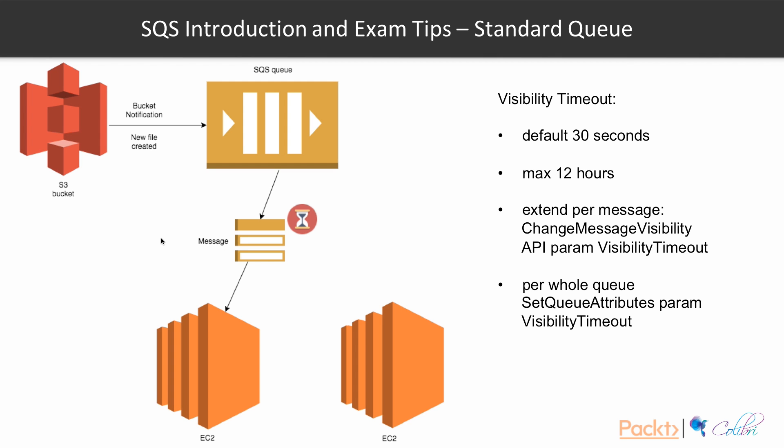The default visibility timeout is 30 seconds, with a maximum of 12 hours. You can extend the visibility timeout per message using the ChangeMessageVisibility API and updating the visibility timeout parameter — note that this restarts the timeout with the new value from the point of the API call. You can also set it for the whole queue using the SetQueueAttributes API. The maximum visibility timeout for a message is 12 hours.